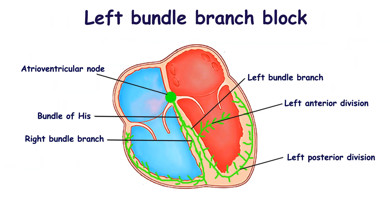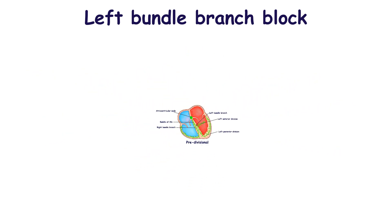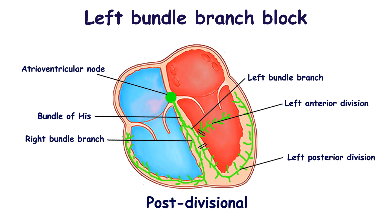Left bundle branch block may be caused by a block either in the main left bundle branch, so-called pre-divisional, or by a simultaneous block in both anterior and posterior fascicles, so-called post-divisional.